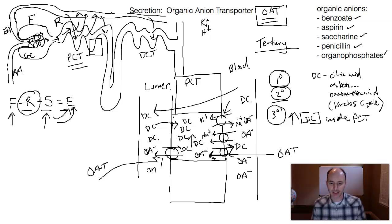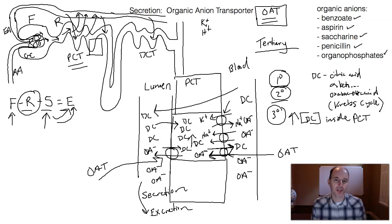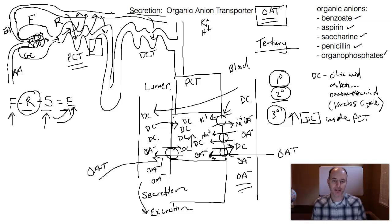Once the organic anions are in the nephron lumen, you have thus secreted them — secretion has taken place. You were able to move them from the blood into the nephron lumen, and now they're destined for excretion. What we've been looking at is the organic anion transporter mechanism, which takes place in the proximal convoluted tubule as a secretion mechanism to move organic anions from the blood back into the nephron so that we can have excretion of those organic anions. Thanks for watching, I hope that helps. Take care.